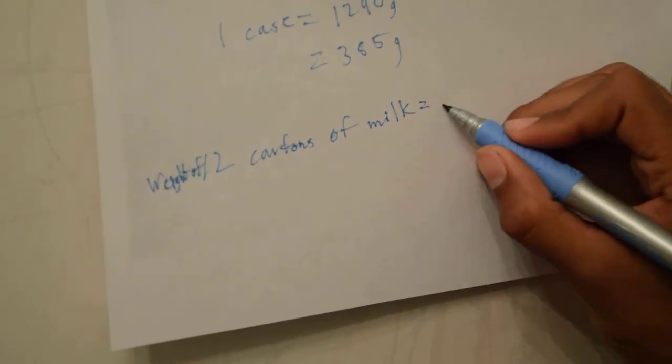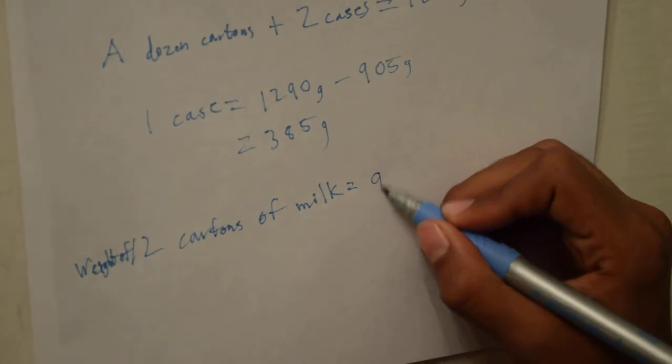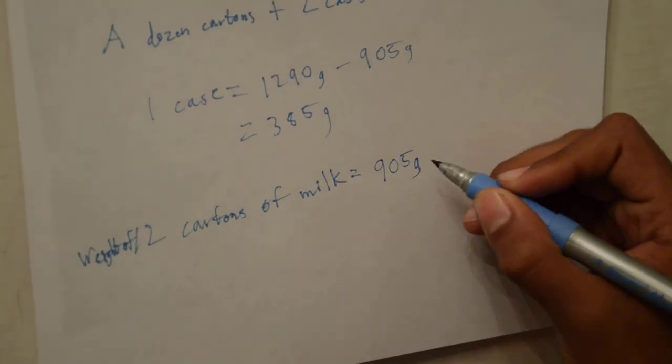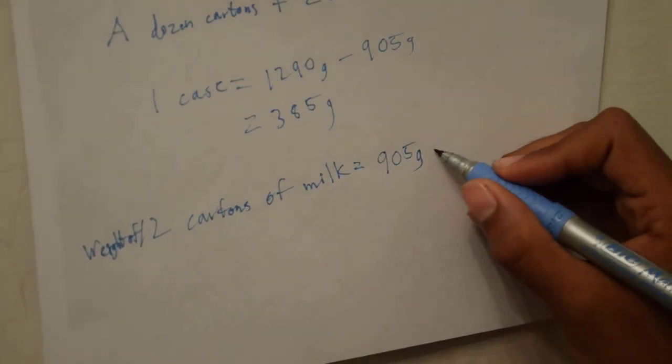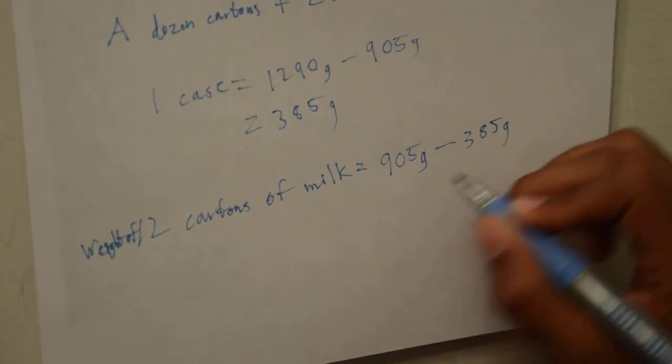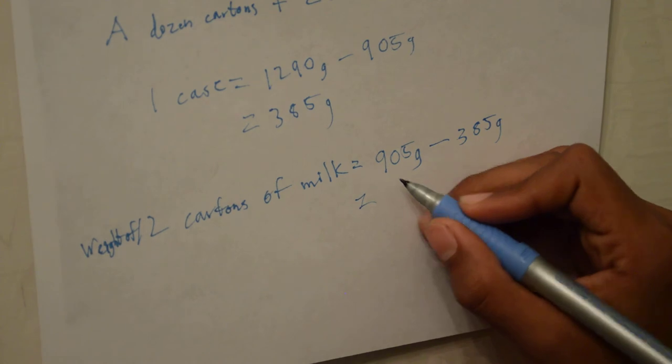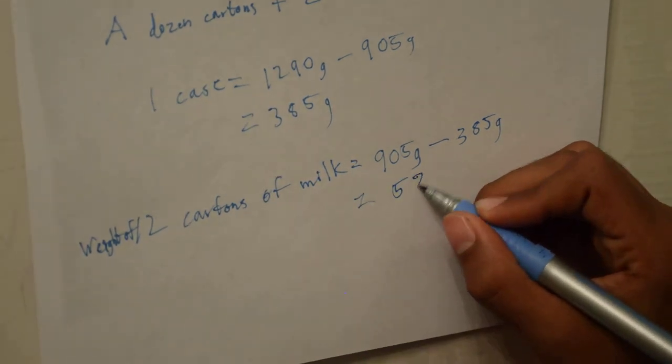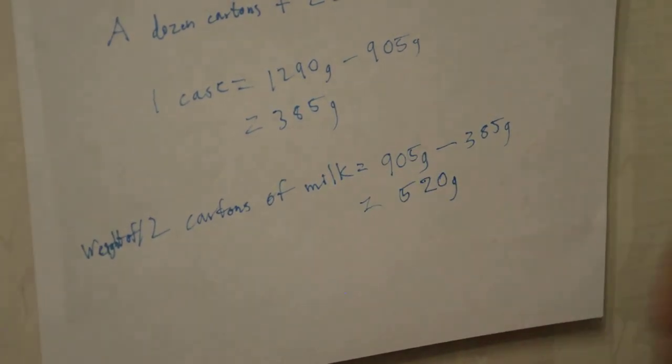That's just the weight of 905 grams, which is the weight of the case and the 12 cartons of milk, minus the weight of the case, which is 385 grams. That yields 520 grams, which is the weight of 12 cartons of milk.